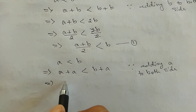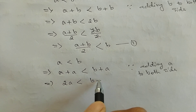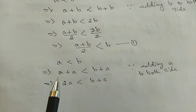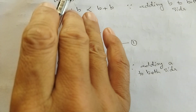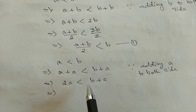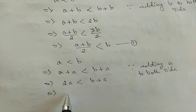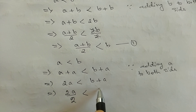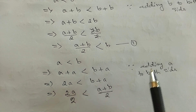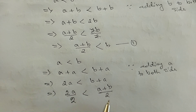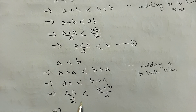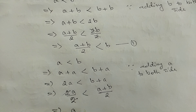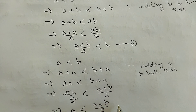We have a plus b, so a plus b divided by 2. We have twice a divided by 2, which is less than a plus b divided by 2.